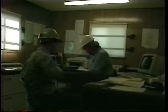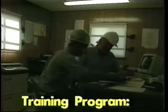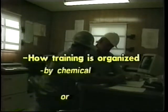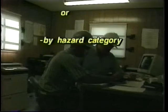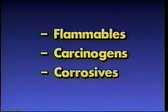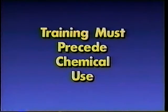Joe also asks to see the contractor's training program for hazard communication. He wants to know who's doing the training, what training materials are used, and whether the employees are being trained about each hazardous chemical separately or about the various categories of hazards discussed in the standard, such as flammables, carcinogens, or corrosives. Employees must be trained on how to protect themselves from the hazards of the materials they work with. He wants to know how employees are trained about the hazards of materials in any unlabeled piping and what to do in emergencies. Remember, all training must be done before an employee uses a chemical.